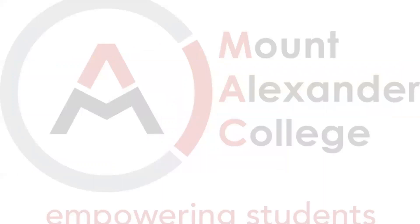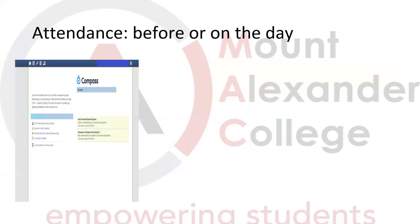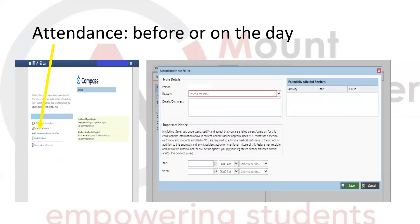Let's now talk through some of the functions you can use for attendance. If your child is absent, you can log their absence before or on the day. In the browser, you simply click the plus button, which will bring you to the attendance note editor. This has a drop-down box with different reasons why your child might be absent — you simply click on the reason. You can give further details or add a comment, but it's not necessary. You'll also need to add the start and finish date, and for an absence that may not be the whole day, you can click a period or personalize the times. Then you simply click save.